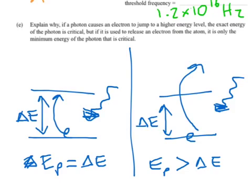So, can you see that for the second case where it's releasing the electron, it's only a minimum value to clear that level. Whereas, in this case, on the left, you have to get it exactly bang on for it to sit on top of there. So, let's just read the question again and make sure we've answered it. Explain why if a photon causes an electron to jump to a higher energy level, the exact energy of the photon is critical. Yes, we've done that because it has to sit on that level. If it's got more, it'll pass it and escape. If it's got less, it just won't take it. It'll drop back down to the same level. But if it is used to release an electron from the atom then it's only the minimum energy of the photon that is critical. So, there's the minimum and it jumps clear. I think that's pretty straightforward.